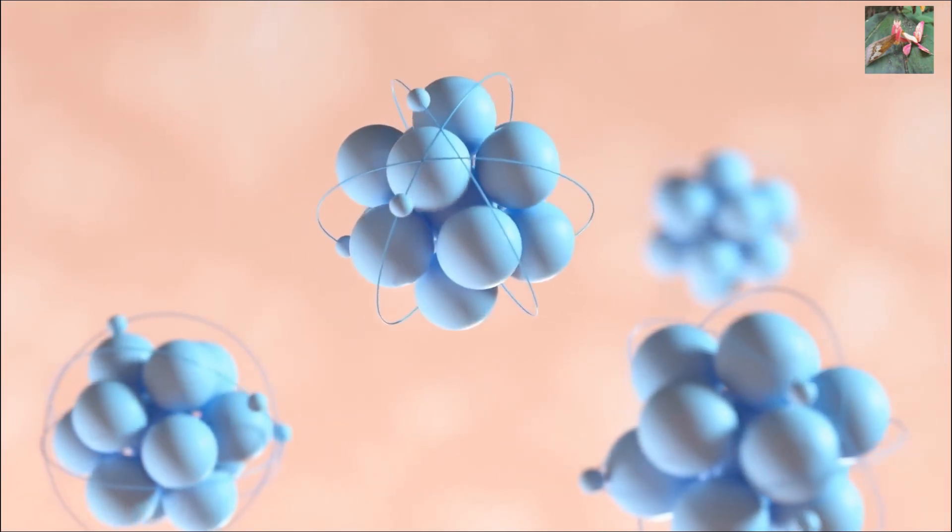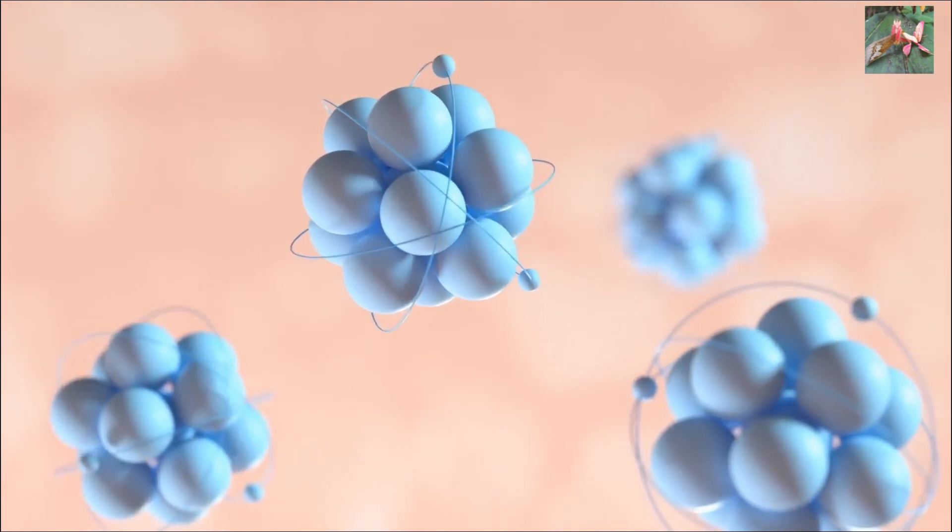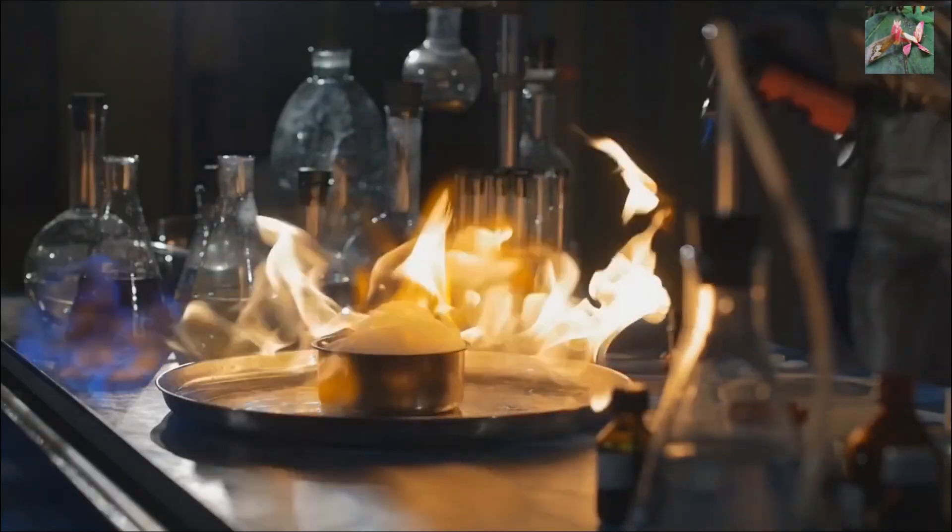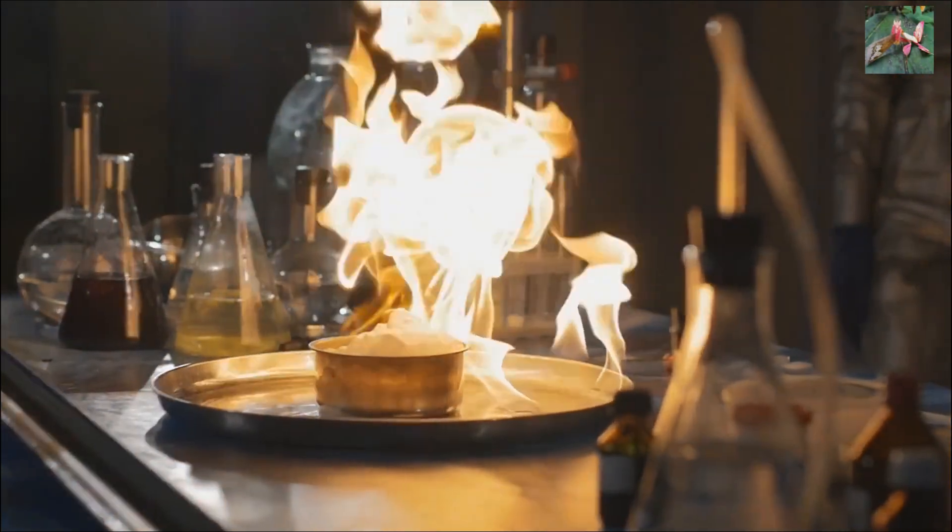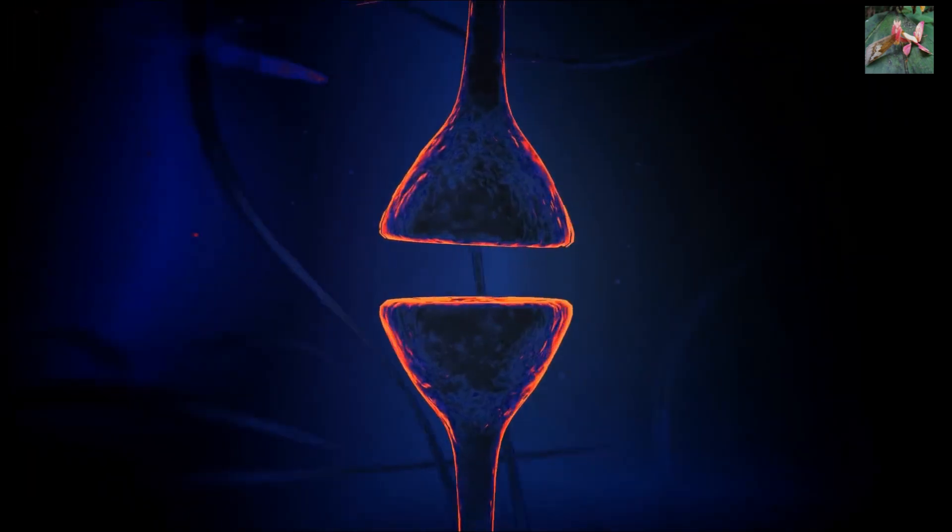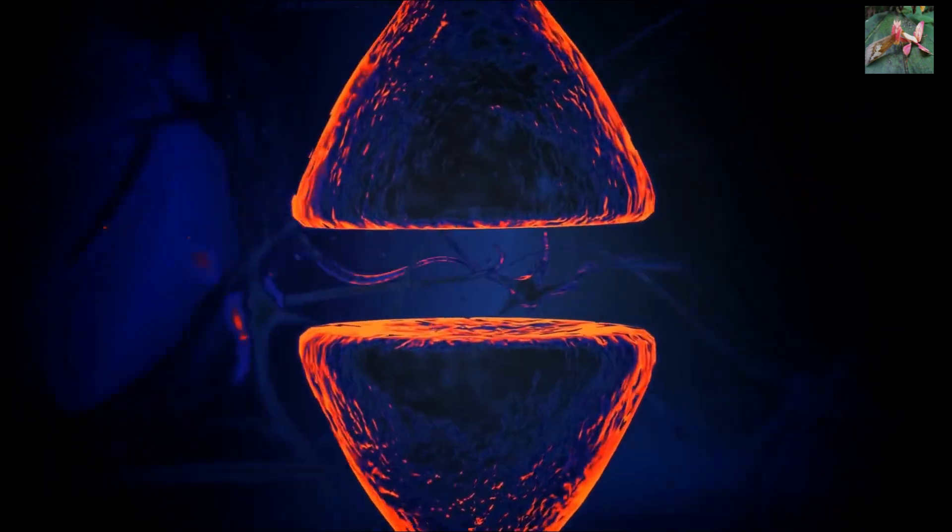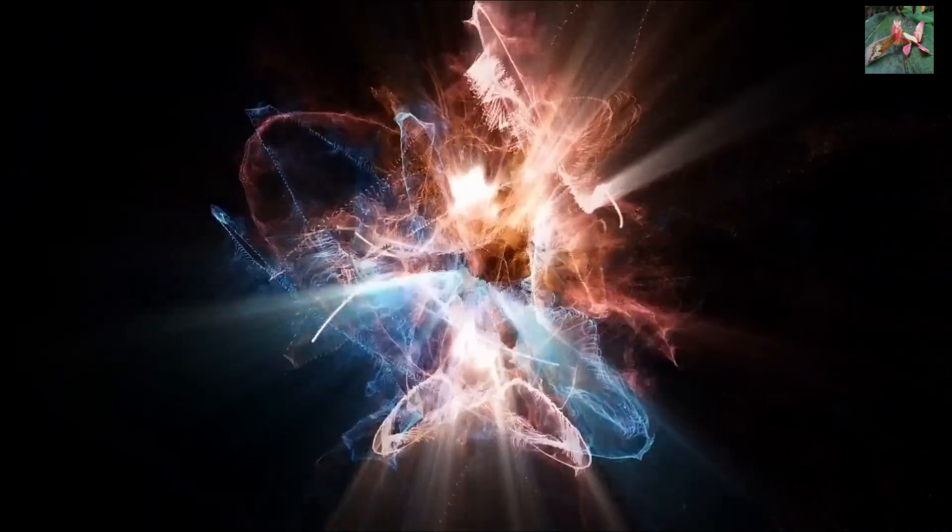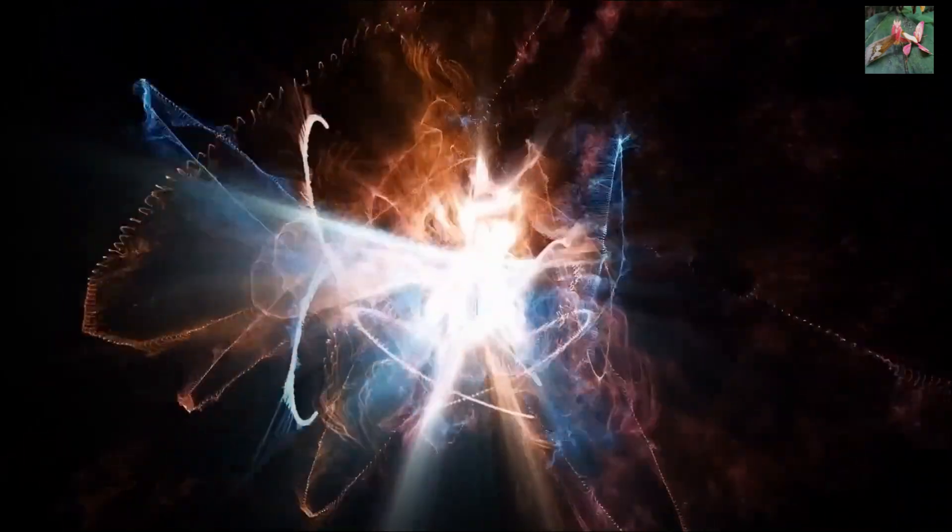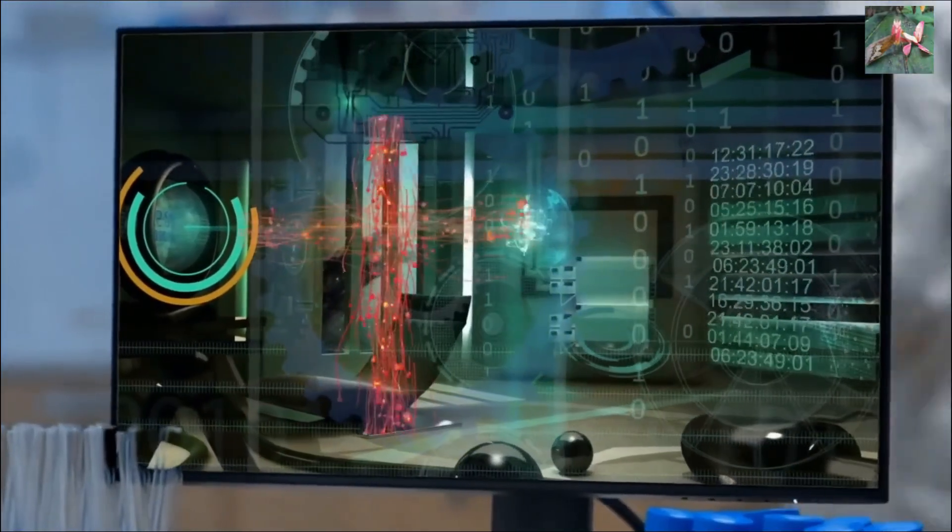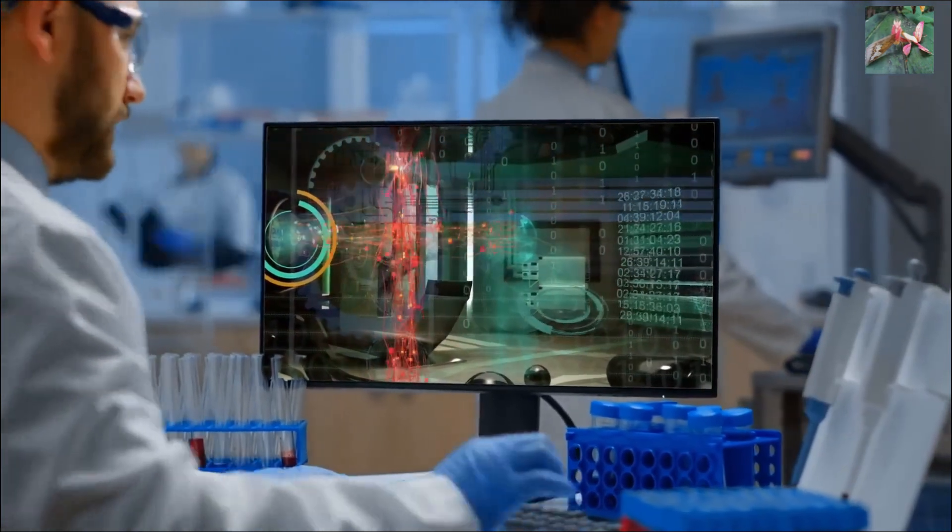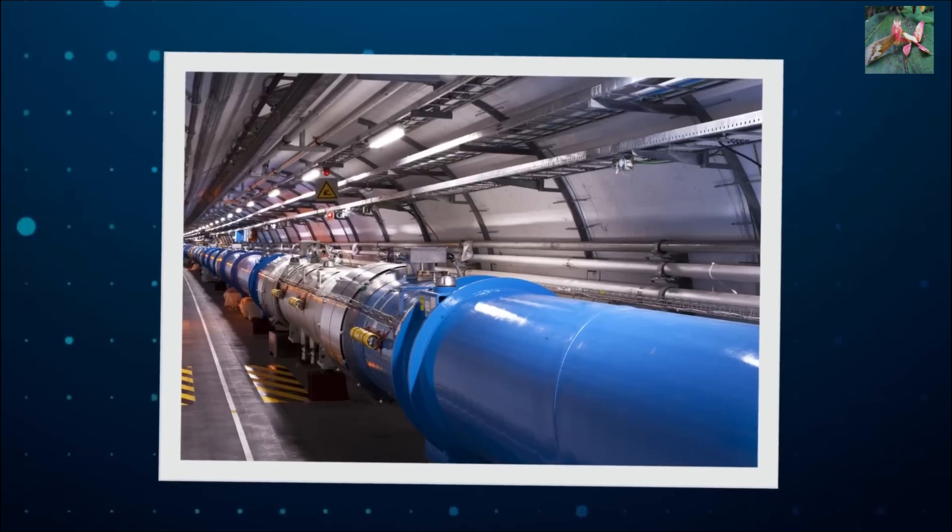Normally, quarks stick together tightly inside particles like protons and neutrons. It's like they're holding hands and can't move around much. But when things get super hot or under a lot of pressure, something interesting happens. The force that holds the quarks together, called the strong force, becomes weaker. It's like their grip loosens. And suddenly, the quarks can move around more freely. This is when QCD matter appears. When the strong force weakens, the quarks start acting like they're in a fun playground. They can zoom around and interact with each other in exciting new ways, and even change their colors. It's like the building blocks coming to life and having a blast.